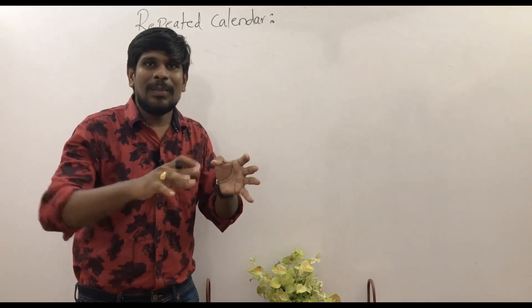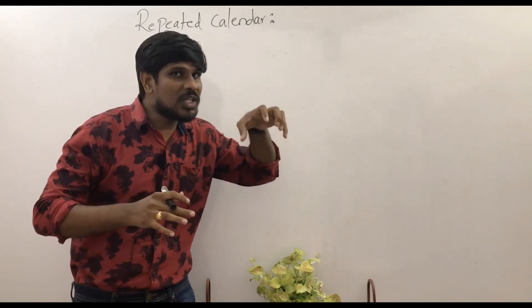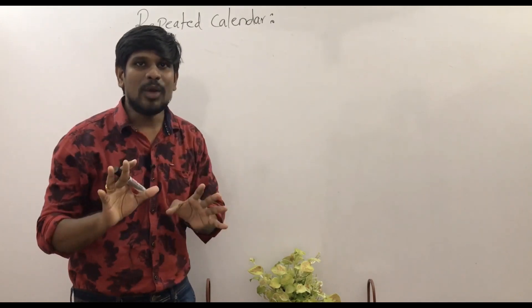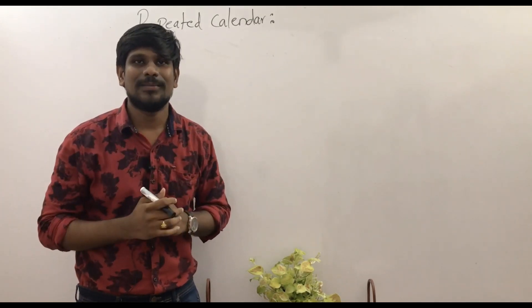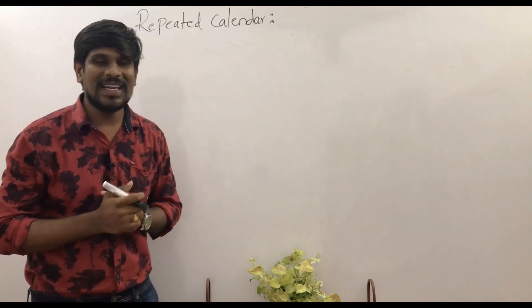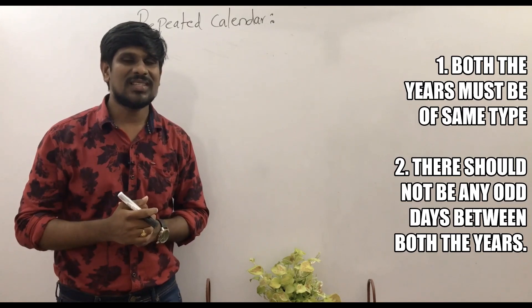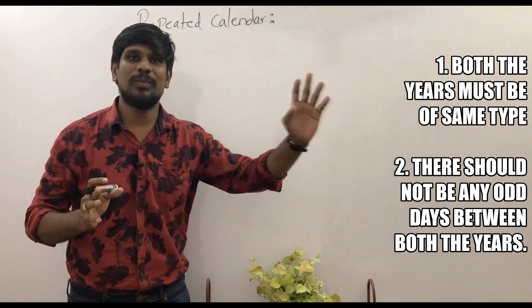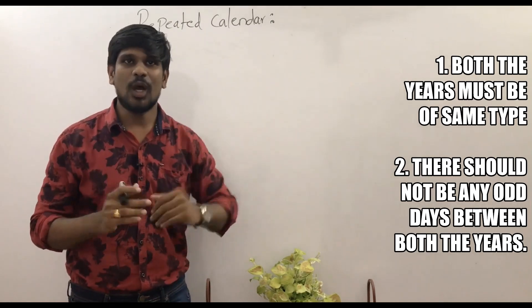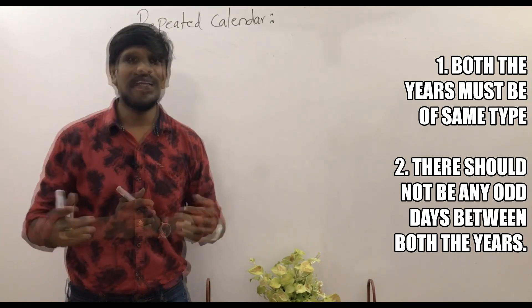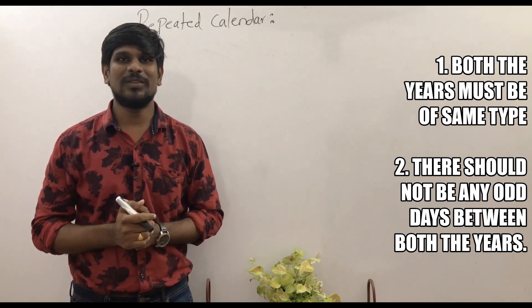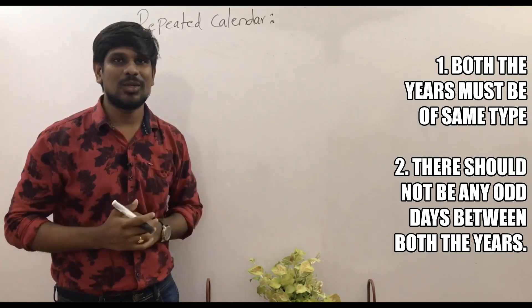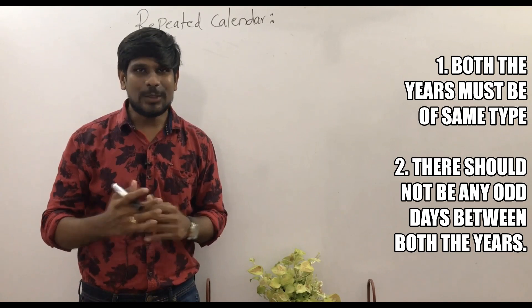2020 and a year, the year is repeated. This is the second condition. Coming to our conditions, there are two main conditions. First condition: both years must be of same type. If question year is leap year, answer should be leap year. If question year is non-leap year, answer should be non-leap year. Second condition: there should not be any odd days between both years. The number of odd days is 0.